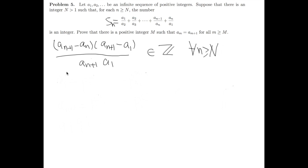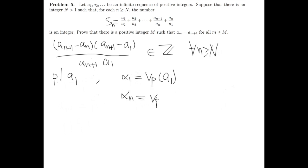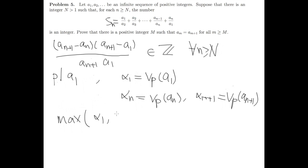So we have proved that for any prime number that does not divide a_1, the power of this prime in the factorization of a_n gets stabilized. Now we need to prove a similar result for a prime number that divides a_1. Let p divide a_1, and denote alpha_1 as the largest exponent in the factorization of a_1, alpha_n as v_p(a_n), and alpha_{n+1} as v_p(a_{n+1}). The main result we are going to prove is that max(alpha_1, alpha_{n+1}) is smaller than max(alpha_1, alpha_n), which gives a decreasing sequence that necessarily stabilizes.